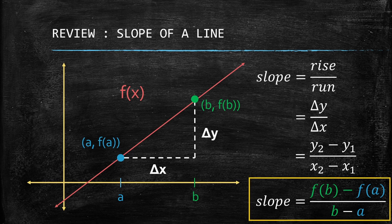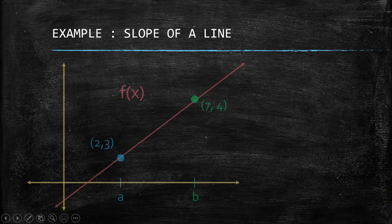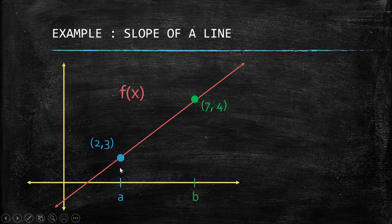Here we have the basic idea of a slope — it is just the difference between the y-values over the difference between the x-values. Let's have an example. Suppose the blue point is the ordered pair (2, 3) and the green point is the ordered pair (7, 4).